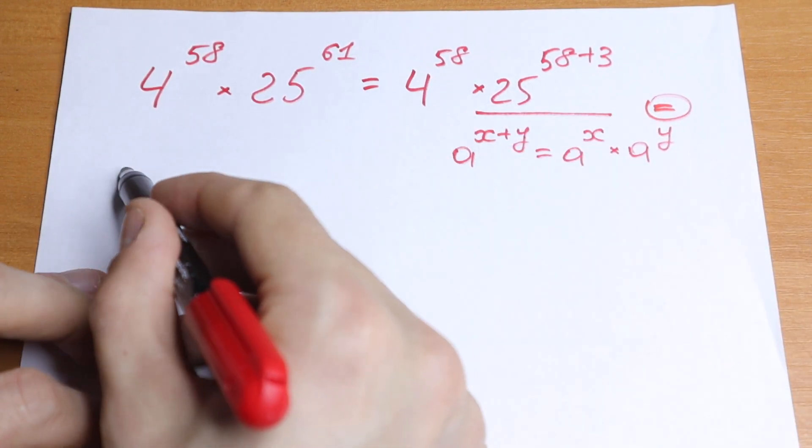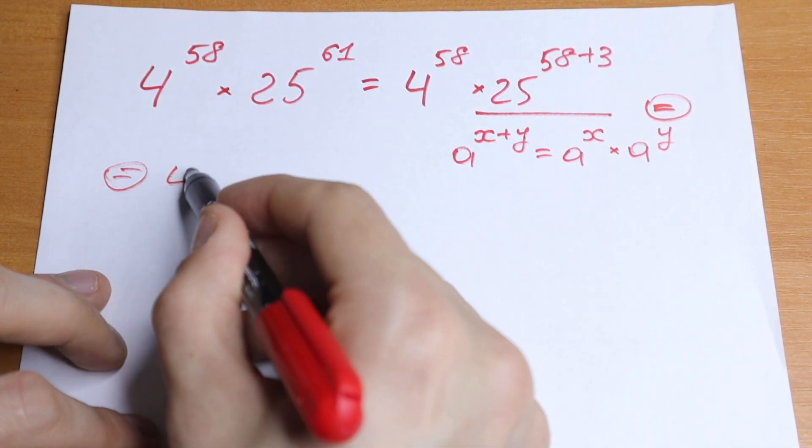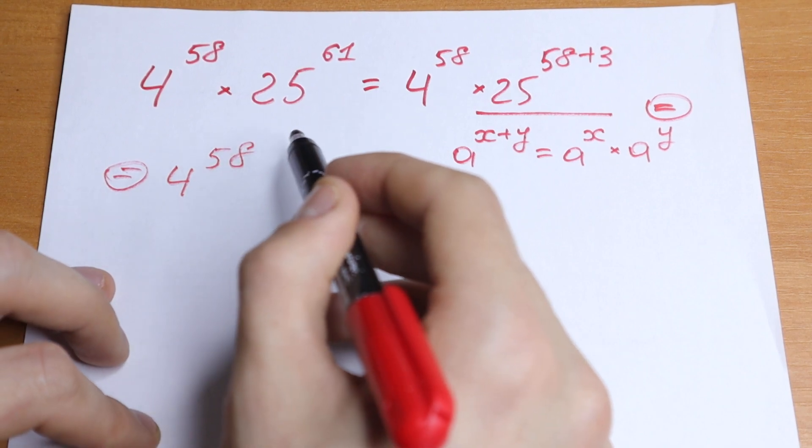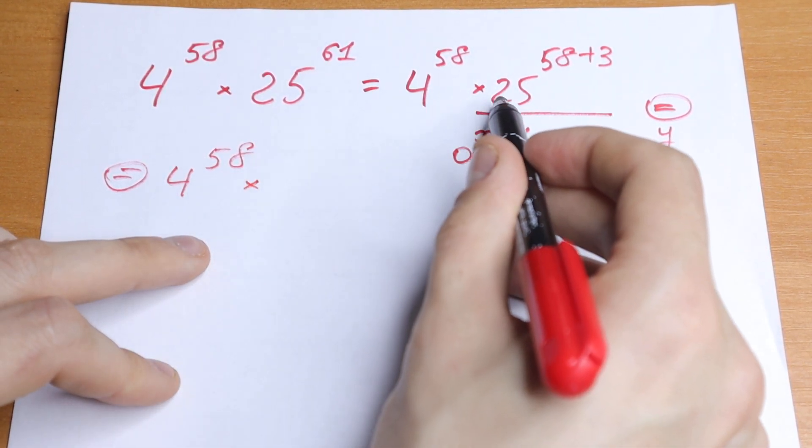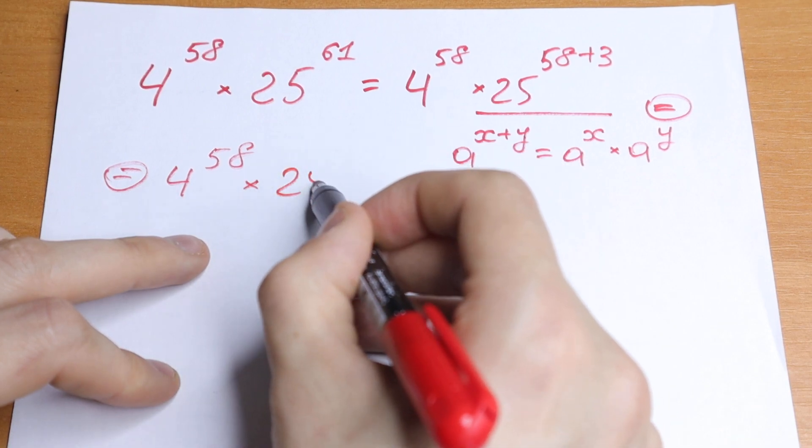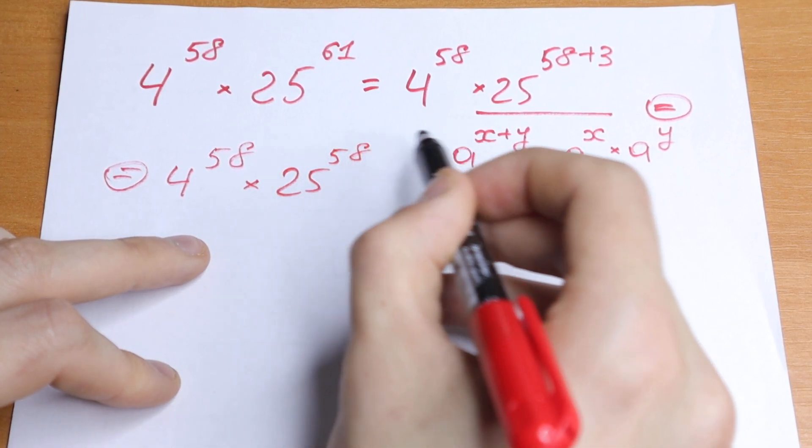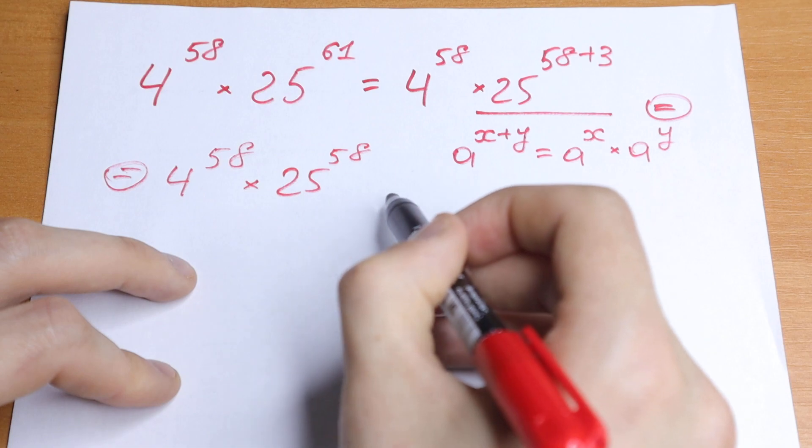So what we'll have? We will have 4 to the power 58, and let's multiply this by 25 to the power 58, and let's multiply this by 25 to the power 3.